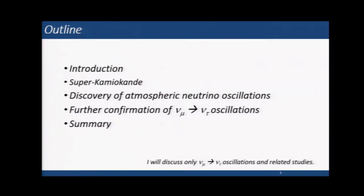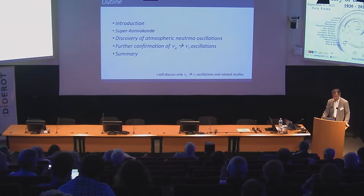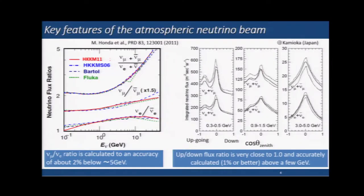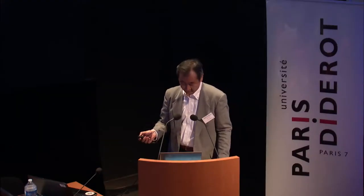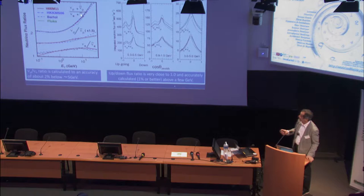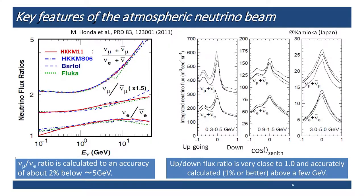Then I'm going to talk about the Super-Kamiokande experiment and move on to the discovery of neutrino oscillations, concentrating on nu-mu to nu-tau oscillation studies. First, I would like to remind you about the key features of the atmospheric neutrino beam. Here I show the flux ratios: nu-mu over nu-e, nu-mu over nu-mu-bar, and nu-e over nu-e-bar. Four flux calculations are shown, and you can realize that the ratios have been predicted very accurately.